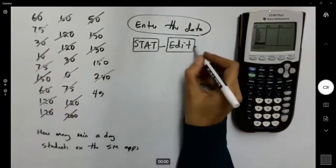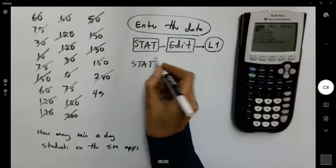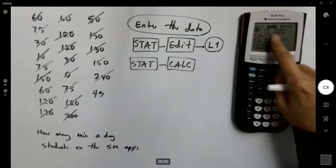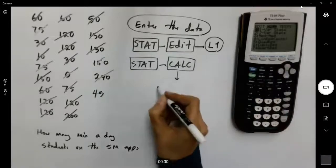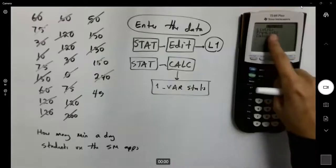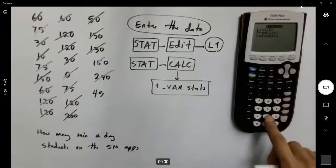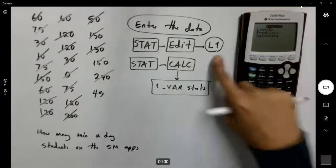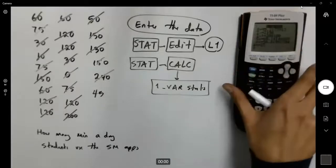Very good. So we entered the data in L1. Now you go to stat, you go to calc. In calc, you select one variable statistics, one var stats. Make sure your numbers are entered in L1. If you are using a different column, you have to use 2nd, 2 for L2, 2nd, 3 for L3, and so on. Since I entered the data in L1, I'm going to use L1. Go to calc, and then it calculates the information that you need.